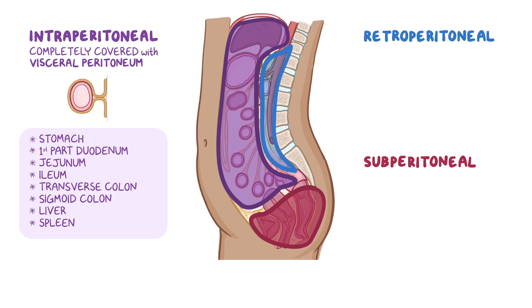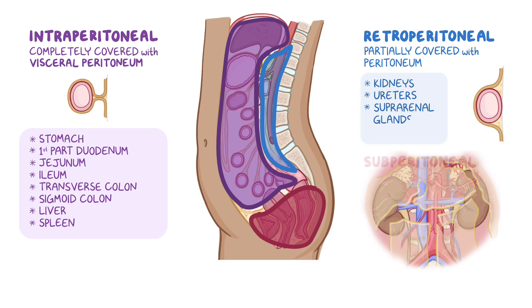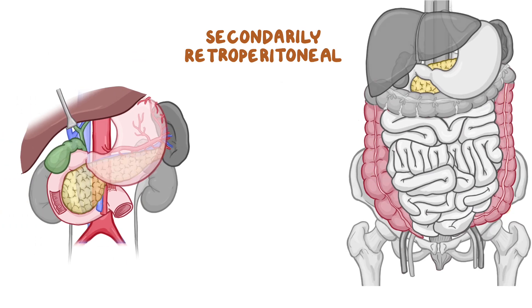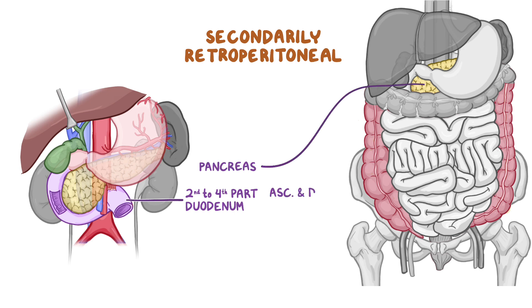The retroperitoneal organs, also known as primarily retroperitoneal, develop posterior to the peritoneal cavity, outside of the peritoneum, so they're only partially covered with peritoneum. The retroperitoneal organs include the kidneys, ureters, suprarenal glands, and rectum. There are also secondarily retroperitoneal organs, where they begin as intraperitoneal but later in development become attached to the posterior abdominal wall. These include the second to the fourth part of the duodenum, pancreas, and the ascending and descending colon.